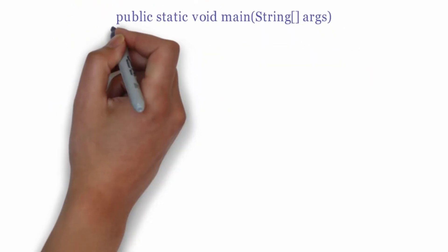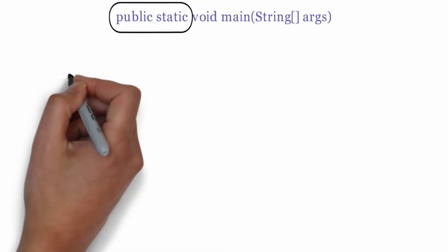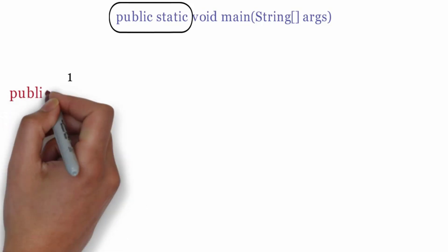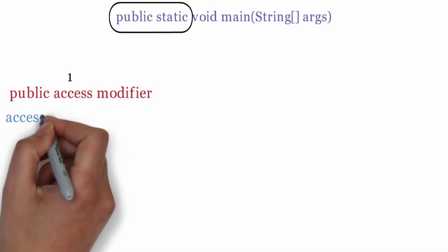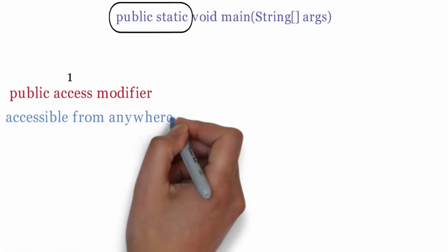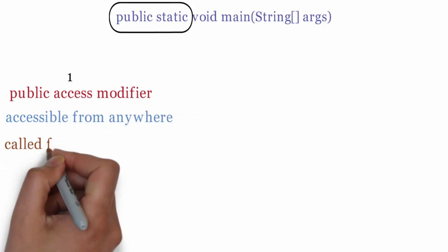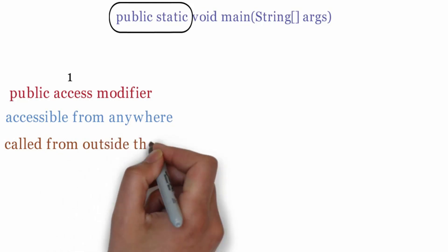Main method is declared as public static because of two reasons. First reason is public access modifier. The public keyword allows the method to be accessible from anywhere in the program which means it can be called from outside the class in which it is defined.